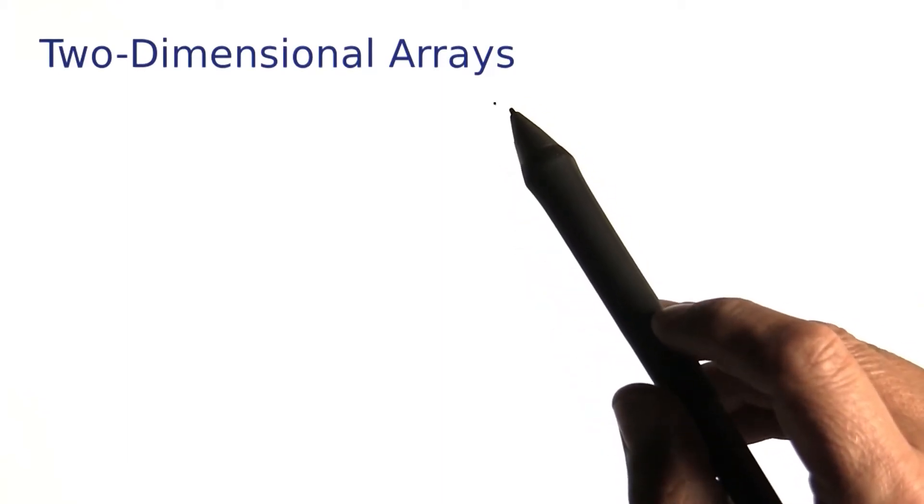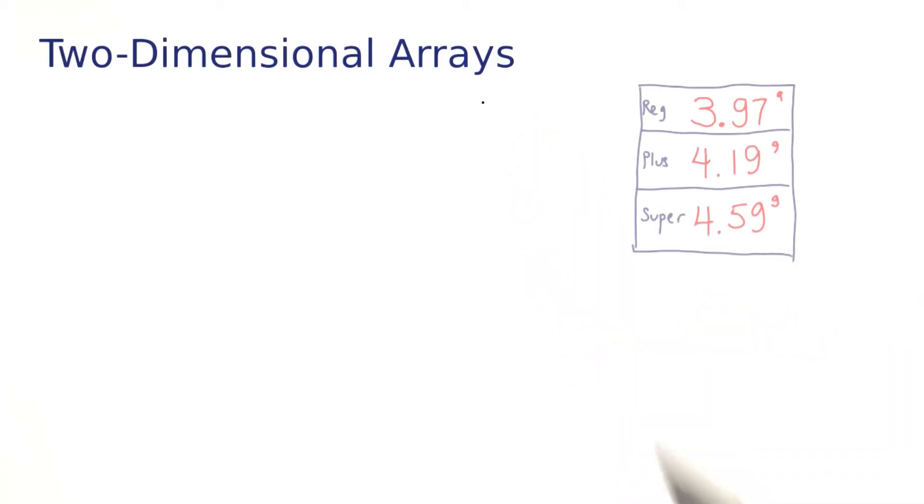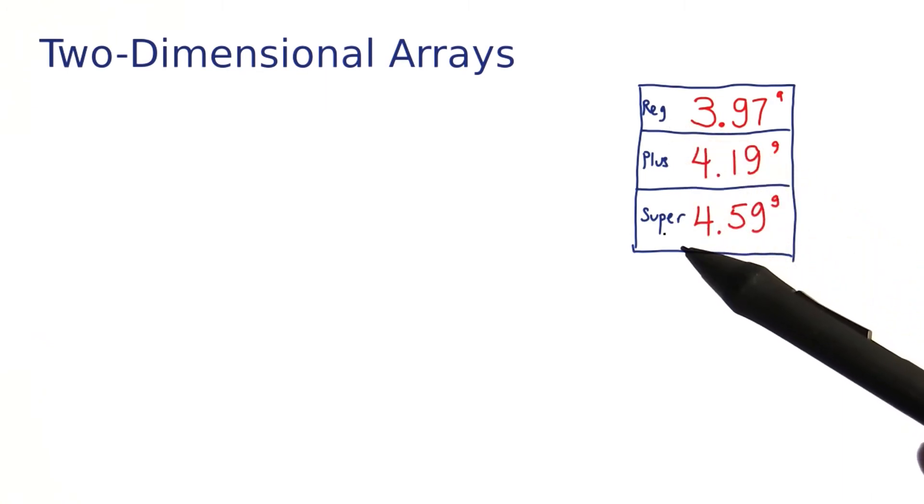You've seen how arrays can store a sequence of values, such as this one. Here we have three prices for three different kinds of gasoline.